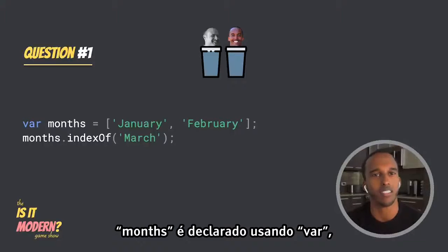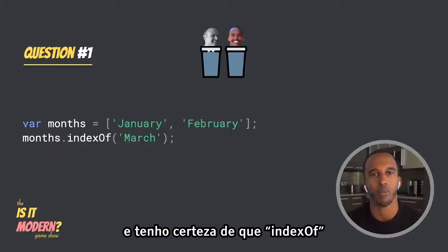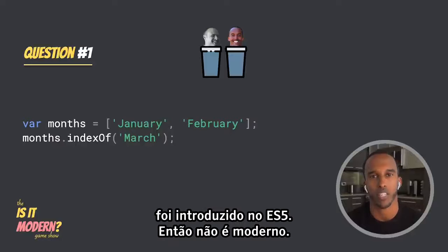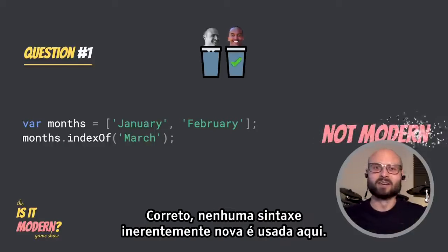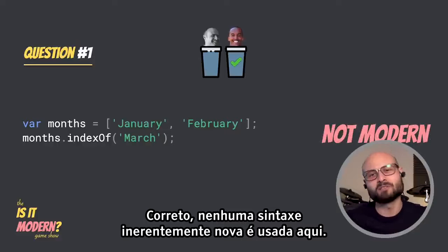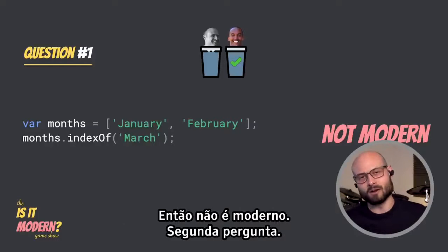I see months is declared using var, and I'm pretty sure indexOf was introduced in ES5, so this is not modern. Correct — there's no inherently new syntax being used here, so it's not modern.